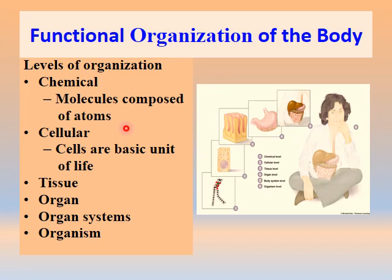Then comes the cellular level. Cells are the basic structural and functional units of life, and all basic functions are performed at the level of cells. Cells with similar origin, function, and structure collectively form a particular tissue with a particular purpose and function. Different types of tissues form an organ, and organs jointly performing similar functions form an organ system.